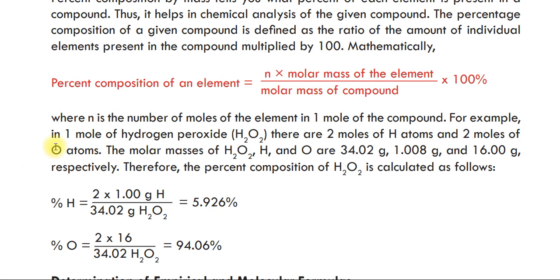For example, in one mole of hydrogen peroxide, there are two moles of hydrogen atoms and two moles of oxygen atoms.